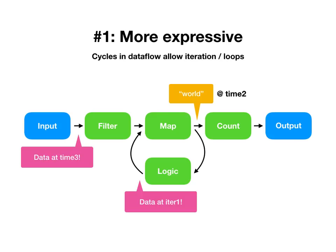So let's look at how timely dataflow handles this with its different approach of communicating about the presence of data rather than the absence. In this setting, the input might say 'I might have something at time three' — just to clarify that otherwise time two is done. And logic might say 'I may have some data at iteration one,' which it supplies to map. Map processes it and hands some data back to logic, which then says 'I've got data at iteration two.'